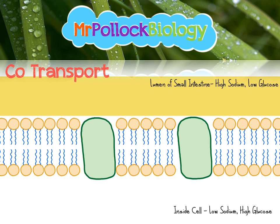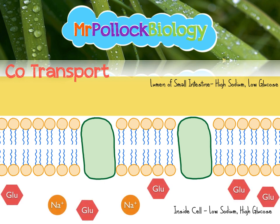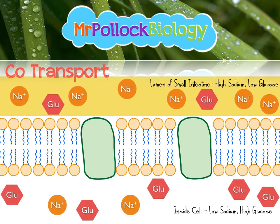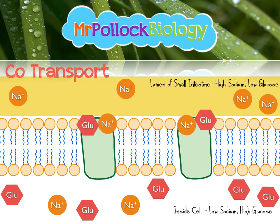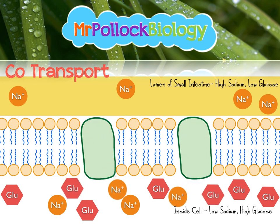We've got the lumen of the small intestine at the top and the inside of an epithelial cell at the bottom. There is glucose and sodium both inside and outside the cell. Notice the concentration gradients: there's more glucose inside the cell than outside, and more sodium outside the cell than inside. For co-transport to work, sodium and glucose bind together to the co-transporter. Because sodium is being dragged down its concentration gradient, that effectively forces the glucose through. That movement changes the tertiary structure of the protein, forcing the two molecules through together. This only works if both sodium and glucose are present.